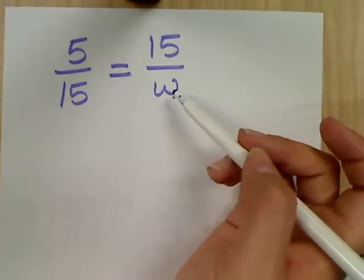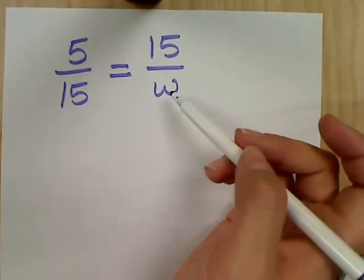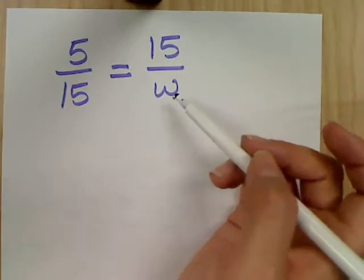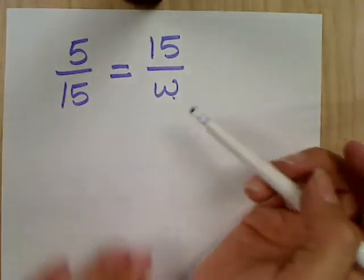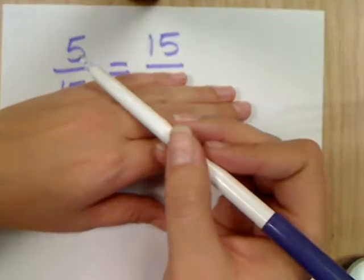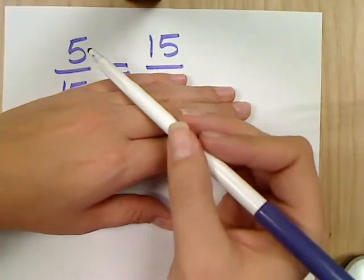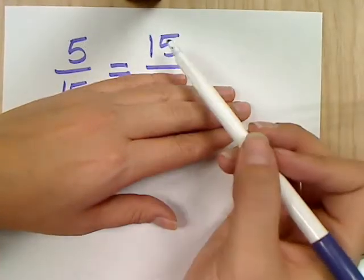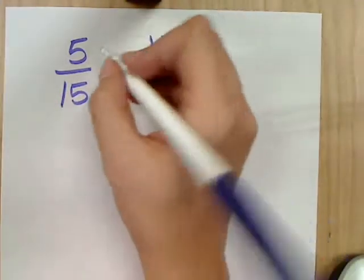But there's also another option, and it's a shortcut that sometimes works, but sometimes doesn't. So let's see if it works. What we would do is we would look at these two numbers and ask myself, 5 times what gives me 15? Okay, so times 3.